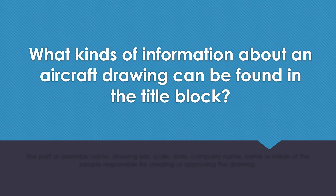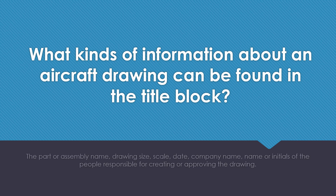What kinds of information about an aircraft drawing can be found in the title block? The part or assembly name, drawing size, scale, date, company name, and the name or initials of the person responsible for creating or approving the drawing.